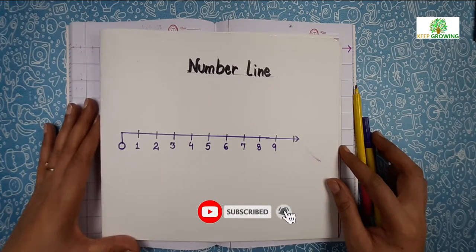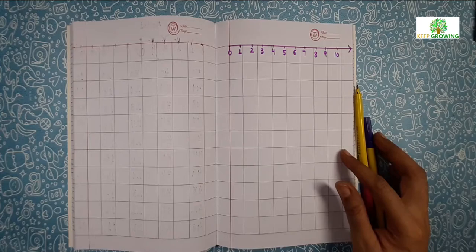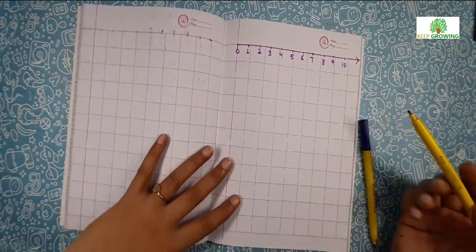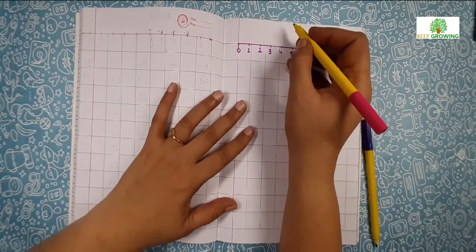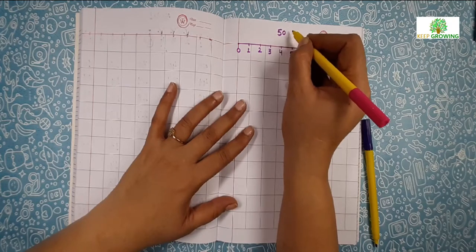So, let's start. First of all, you can make a number line at the top of the sheet in which your child would write the reverse counting. If the child writes reverse counting from 50 to 1,